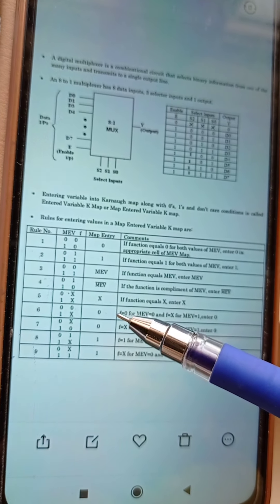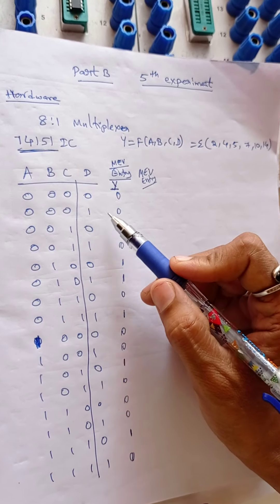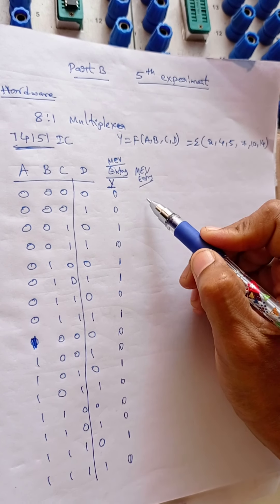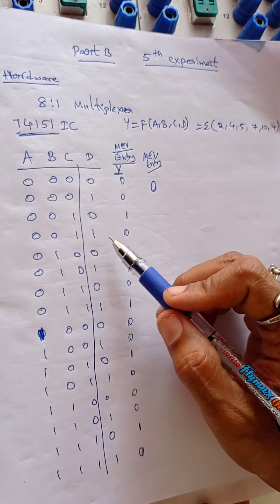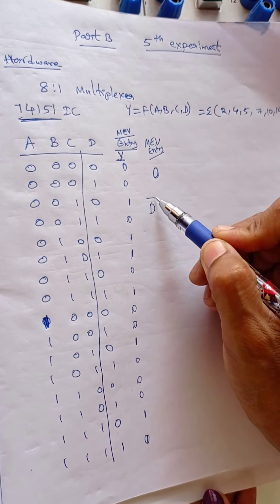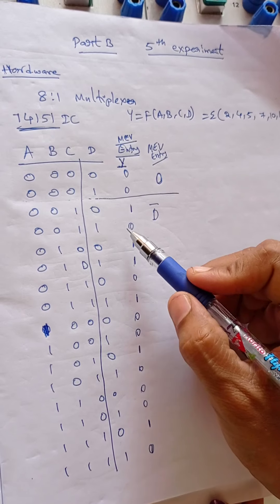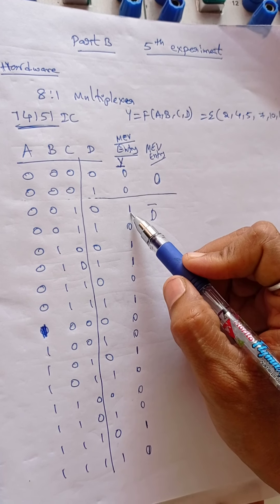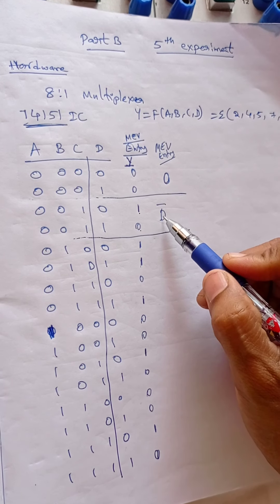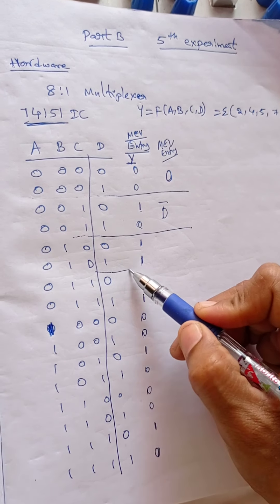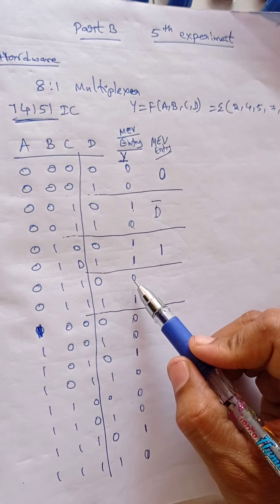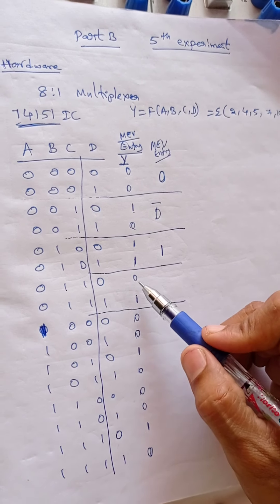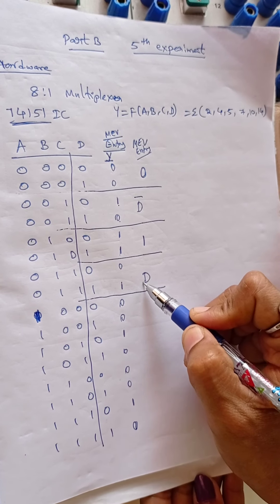Now using this MEV K-map, we are entering here the values. That is 0, 0, 1, 0 this combination it is 0, so you should enter 0. Now 0, 1, 1, 0 inverted value, so D bar, because this is inverted 0 becoming 1, 1 becoming 0. So it is entered D bar. Next both are 1, so you should enter 1. Next these two values 0, these two 1, that means input as well output same, so you should enter D, same value D.